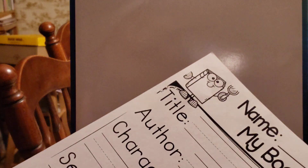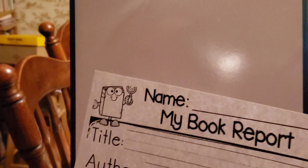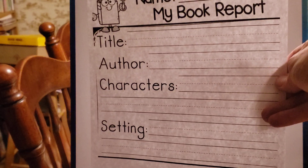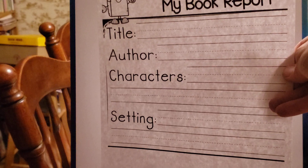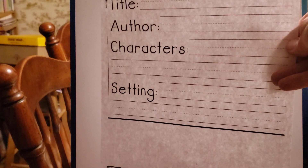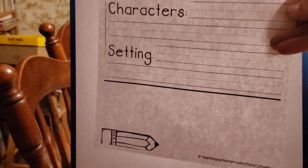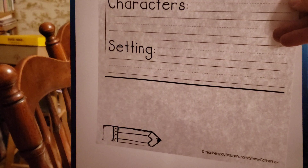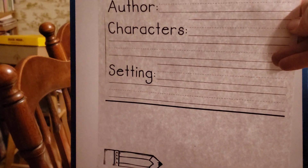Welcome back. We're ready to do our book report for today. Our book report form is made up of many lists. We have the title, the author, the characters, and the setting. Then at the bottom, there is a place to draw a picture of our favorite part. That is what we are going to be filling out today.